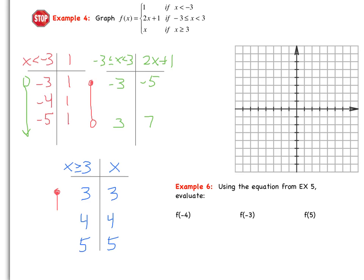Closed circle at 3 following in that direction. Graphing: the first piece is at (negative 3, 1) with an open circle, plotting those points and following along. The middle piece has a closed circle at (negative 3, negative 5) and an open circle at (3, 7) — we connect those. The last piece has a closed circle at (3, 3), and we follow through (4, 4) and (5, 5), drawing that final line.